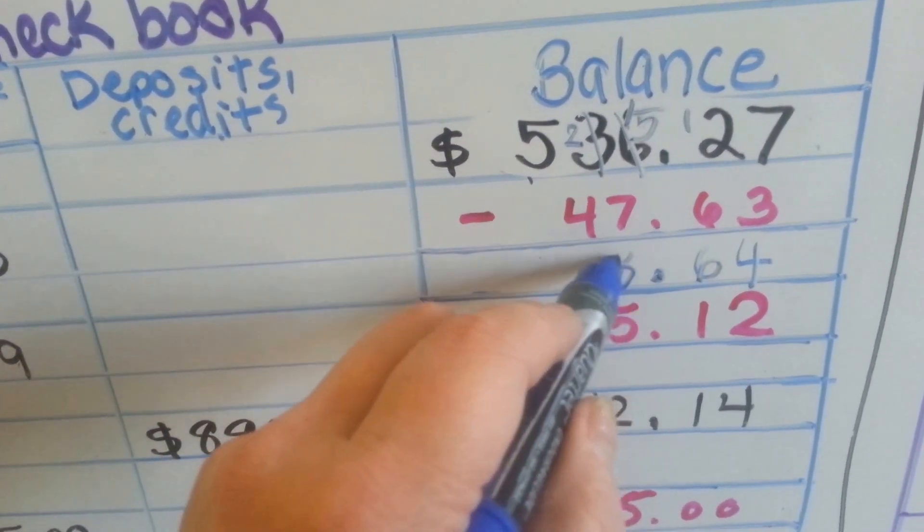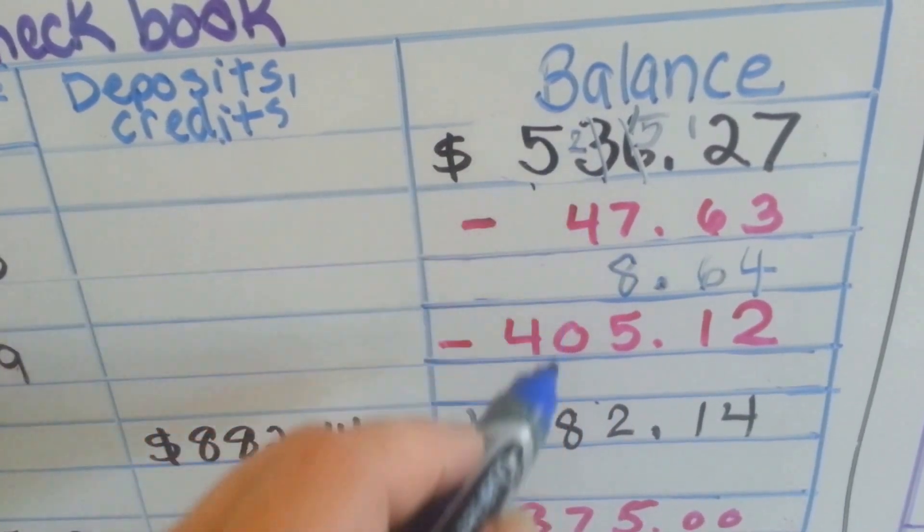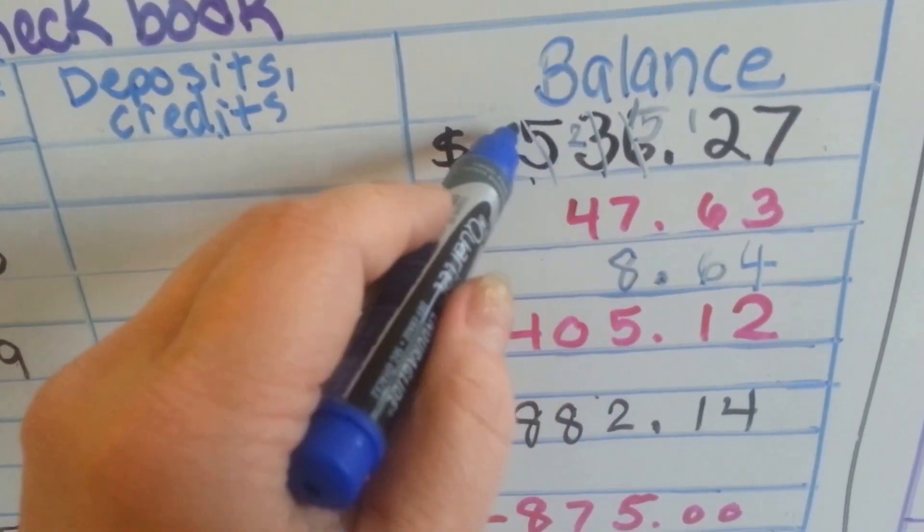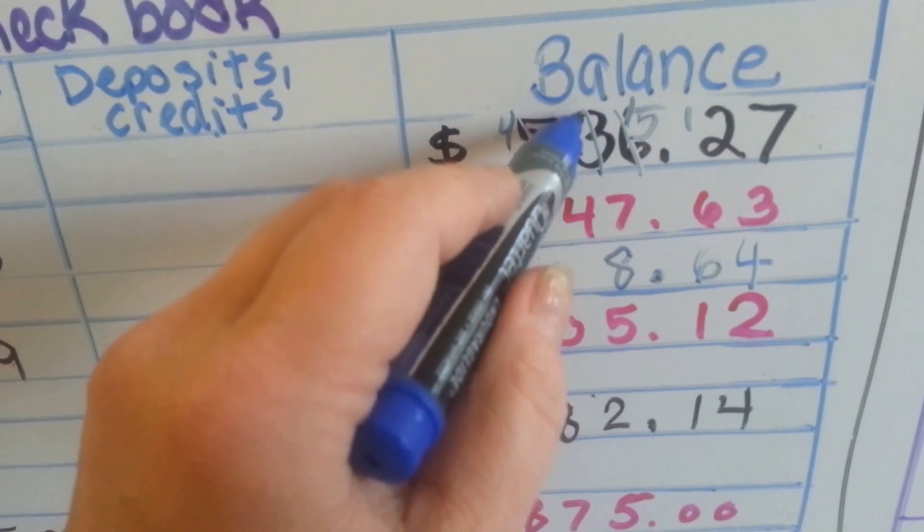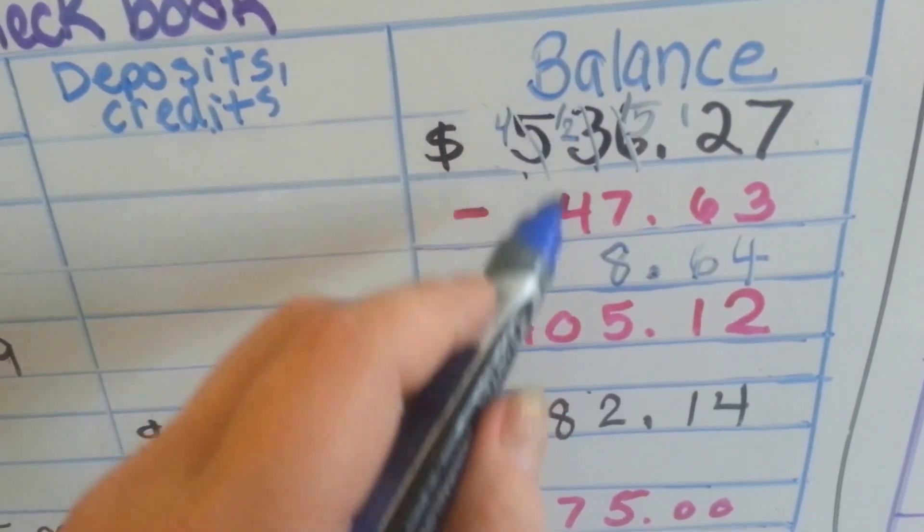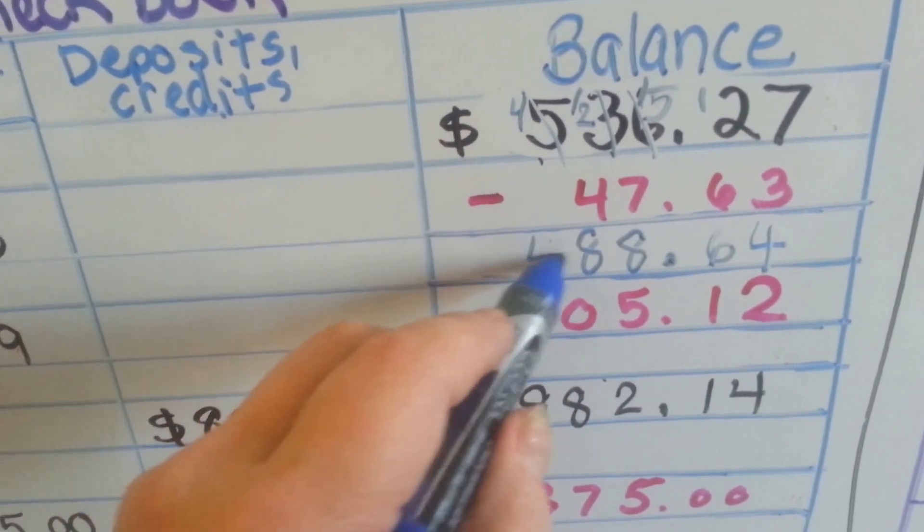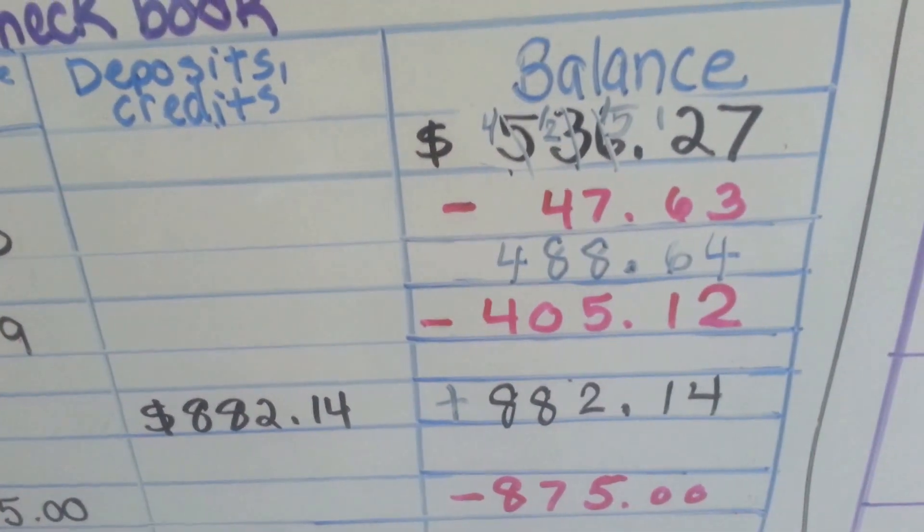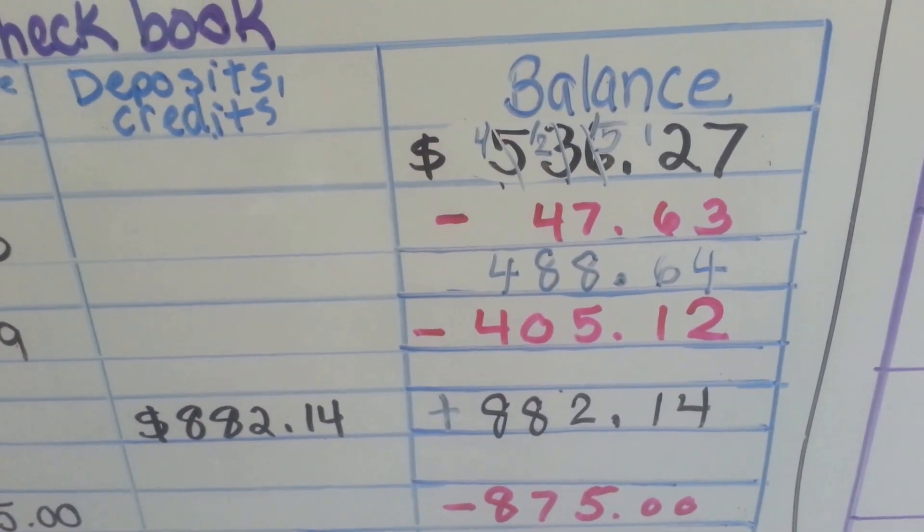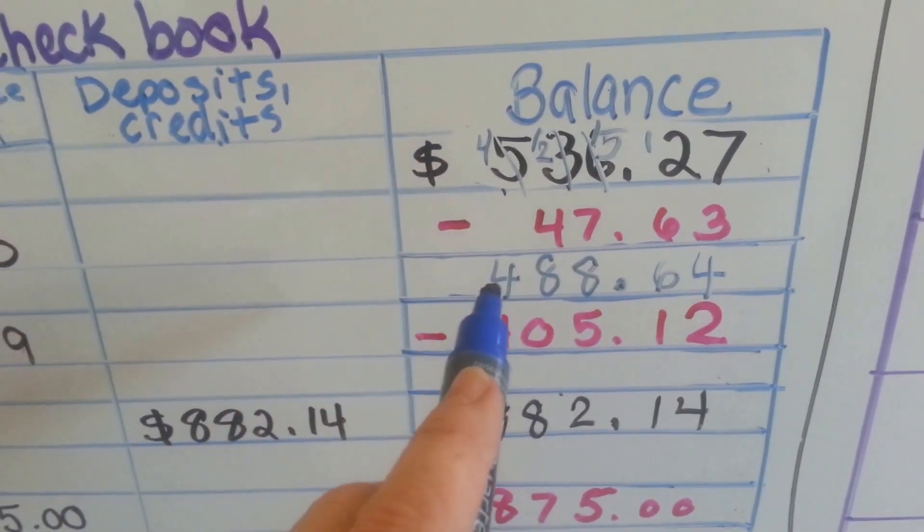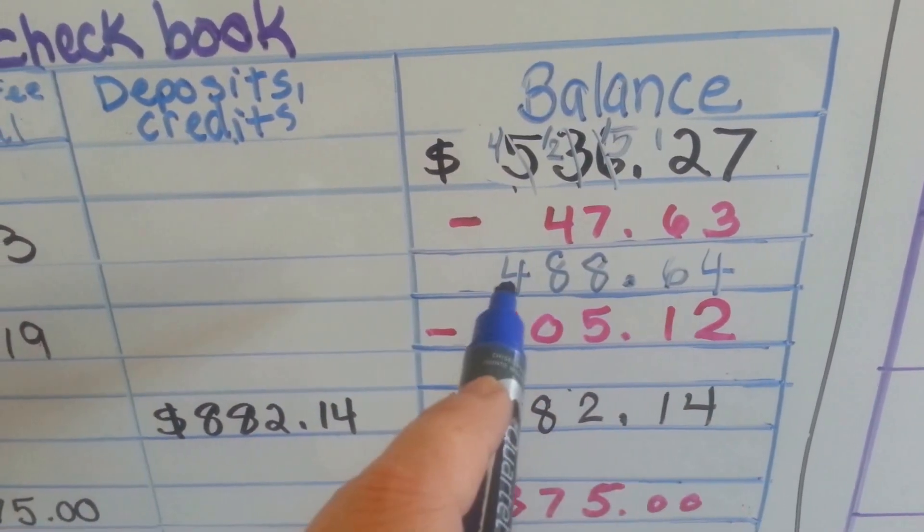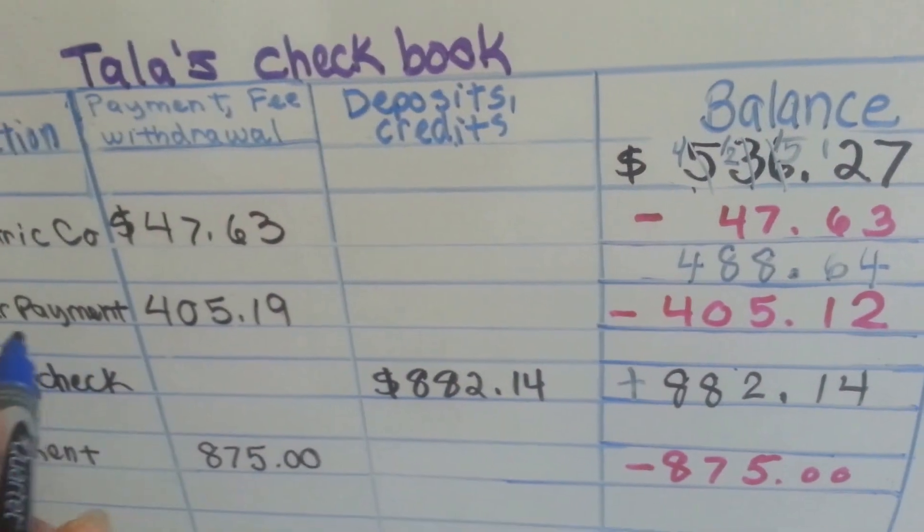2 take away 4, we can't do that, so now we have to borrow it from the 5. It becomes a 4. And the 2 becomes a 12. 12 take away 4 is 8. And we drop the 4 down. Wow, that was a lot of borrowing. So now we've got $488.64. And we need to take away the car payment.